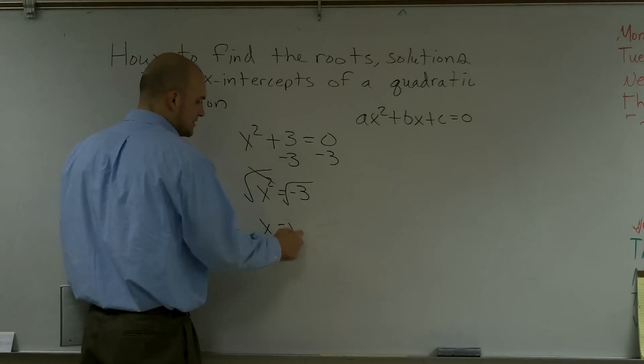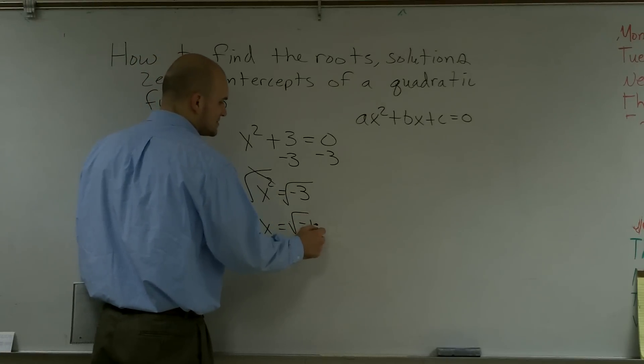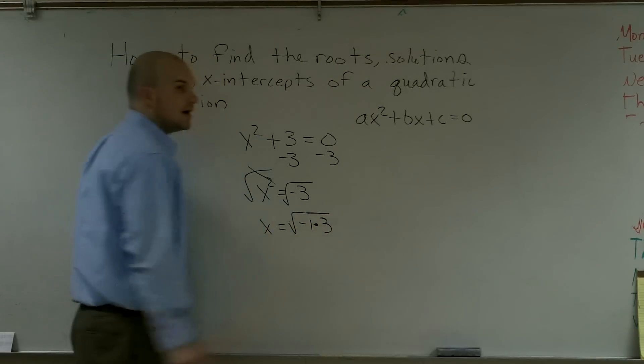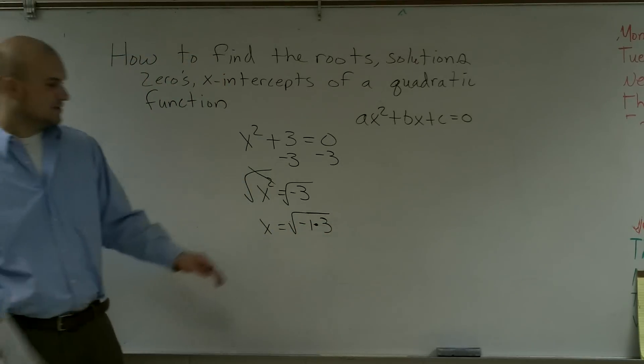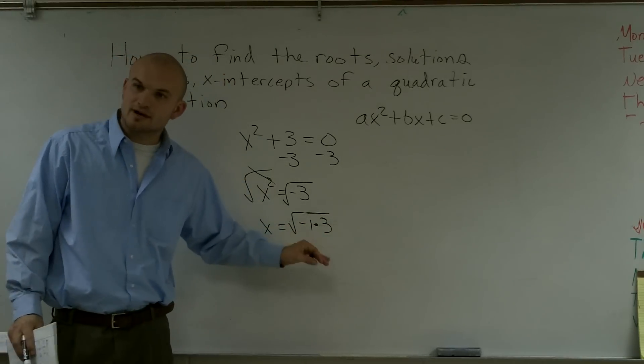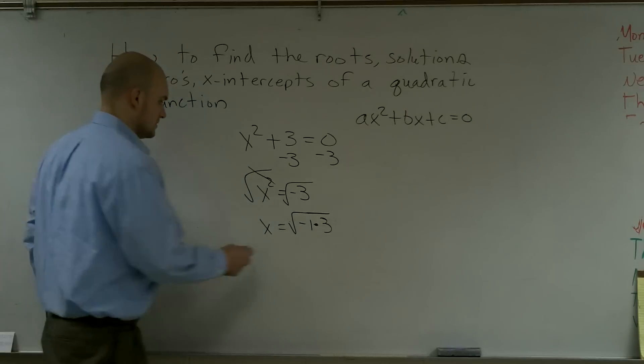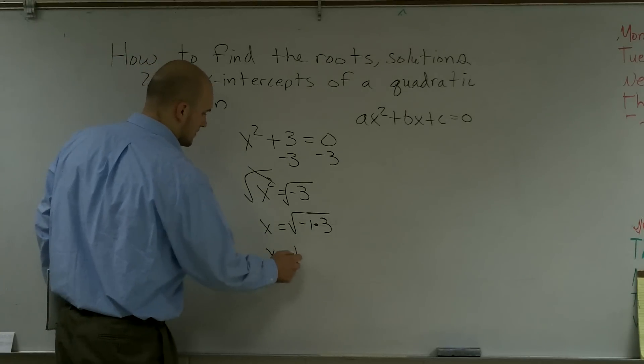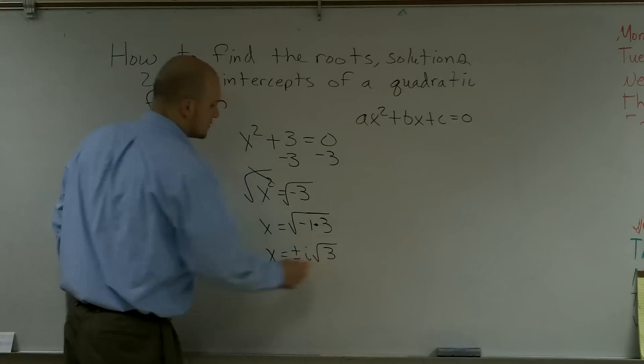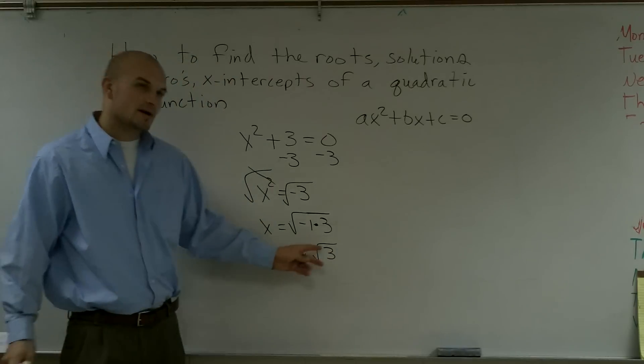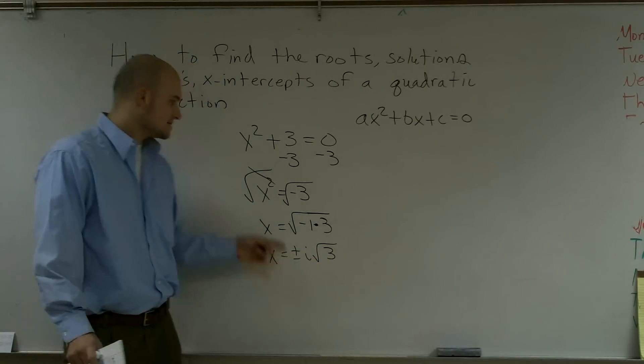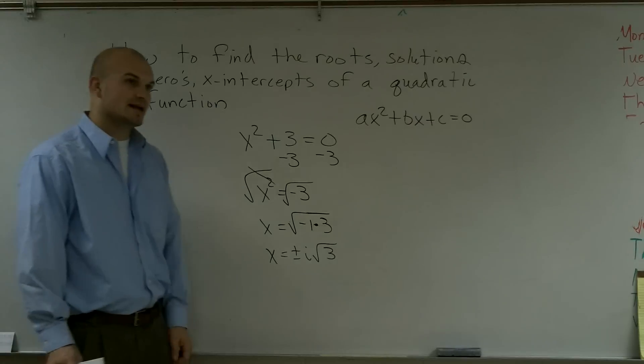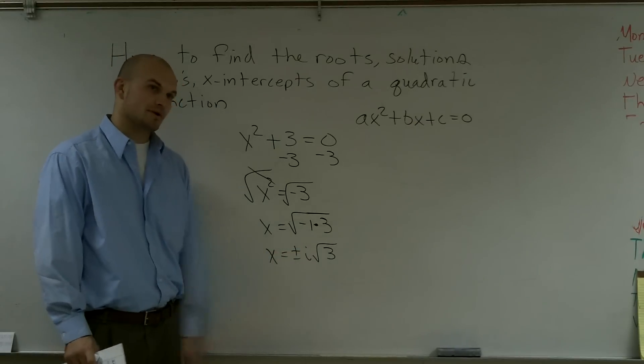now remember, negative 3 can be broken down to negative 1 times 3. And then, what we previously have learned is, remember, the square root of negative 1 is i. So remember, whenever you take the square root of a number, it can be a plus or minus. So therefore, x equals plus or minus i times the square root of 3.